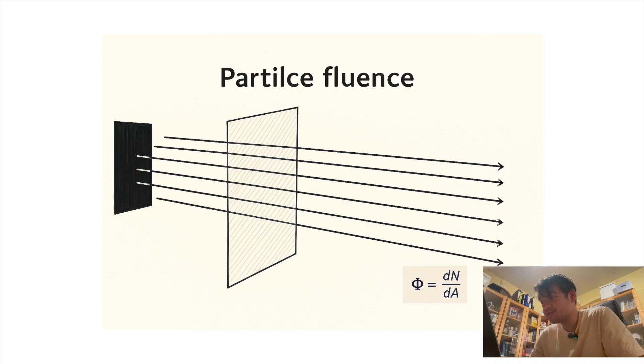Now let's break it down. What are we actually sending into the patient? Photons. And the first thing we care about is how many. That's what we call particle fluence. Particle fluence is the number of particles crossing a surface per unit area.